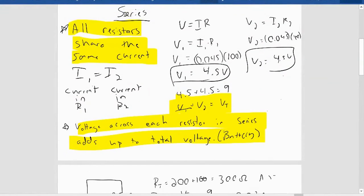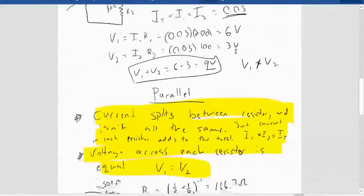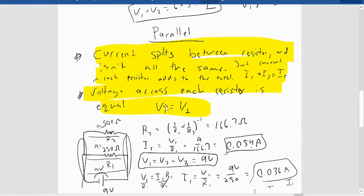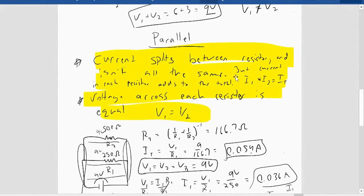For series, all resistors share the same current — it's hugely important that if they're in series their current is equal. For voltage in series, they add up to the total voltage, so the voltages are not the same, but we can find those using Ohm's law. For parallel, the current splits, so they do not share the same current, but it adds up. Whereas the voltage for things in parallel is equal — voltage across resistors in parallel are equal, but current splits and adds up.